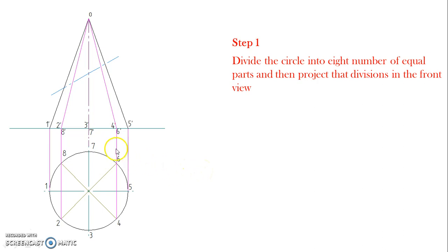After dividing this circle, project all these divisions into the front view. That is 1 dash, 2 dash, 3 dash up to 8 dash.